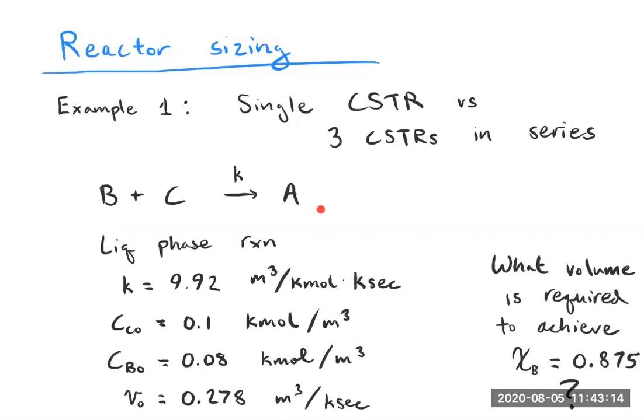I've gone ahead and written out the prompt. So just to mix things up, we've got some letters rearranged here. We have reactants B plus C in this reaction going with a rate constant K to form A, our product. This is a liquid phase reaction and it occurs with rate constant K of 9.92 meters cubed per kilomole times kilosecond. We've got initial concentrations of species C and species B of 0.1 kilomoles per meter cubed and 0.08 kilomole per meter cubed, respectively.